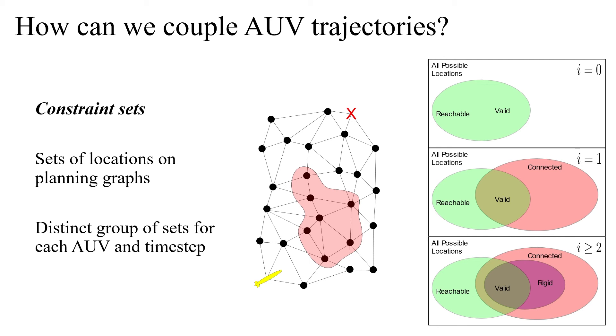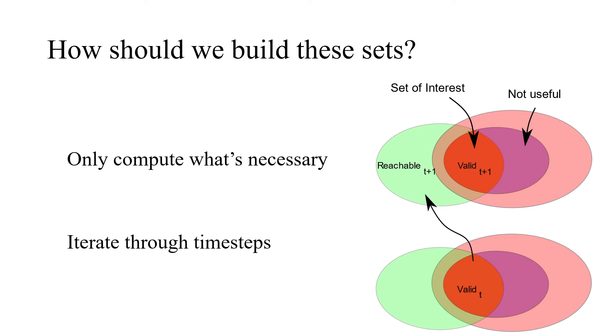Further details on these sets and their relationships can be found within our paper. To actually compute the constraint sets for an AUV, we begin at time step 0 and iteratively compute the constraint sets for the next time step. This process continues until the valid set is found to contain the goal location for that AUV, at which time planning begins. We require that the valid set is within the reachable set, and that the reachable set is all locations reachable from the valid set of the previous time step. This recursive formulation of the valid set means that we know that if the valid set contains the goal location, then the AUV will be able to plan a path to the goal while staying within the valid set at every time step.